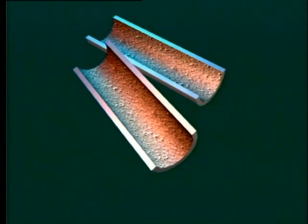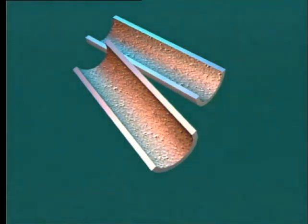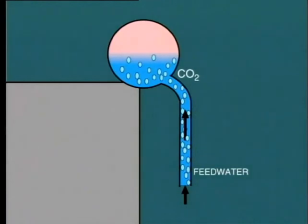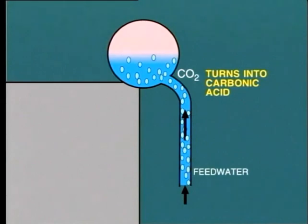The oxygen enters along with the feed water and make-up water. Carbon dioxide, another dissolved gas, is also highly corrosive as it turns to carbonic acid.